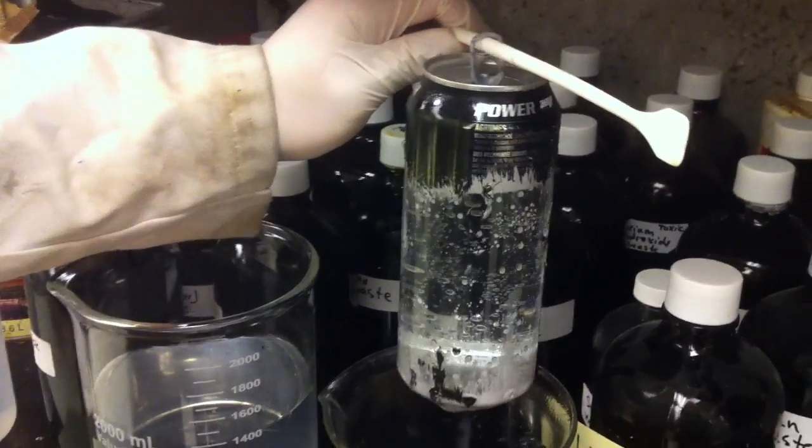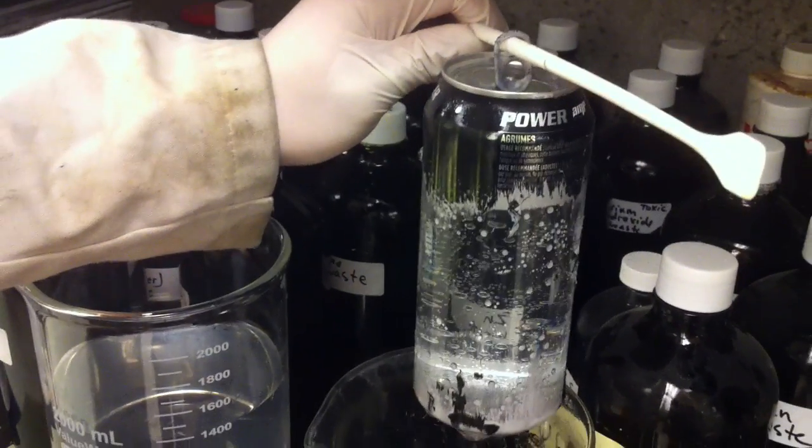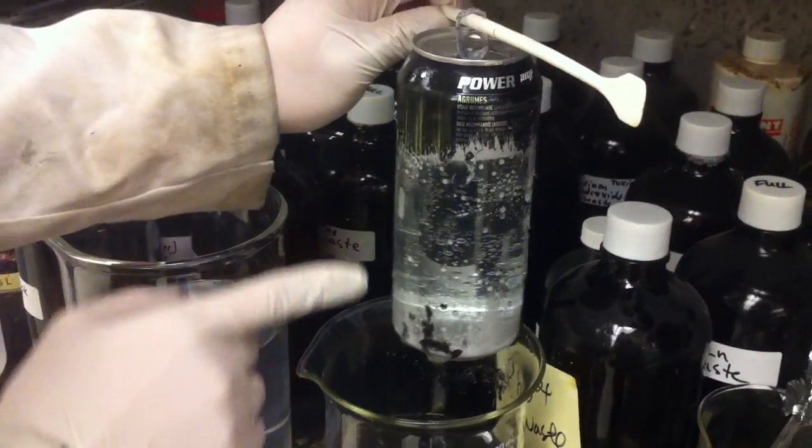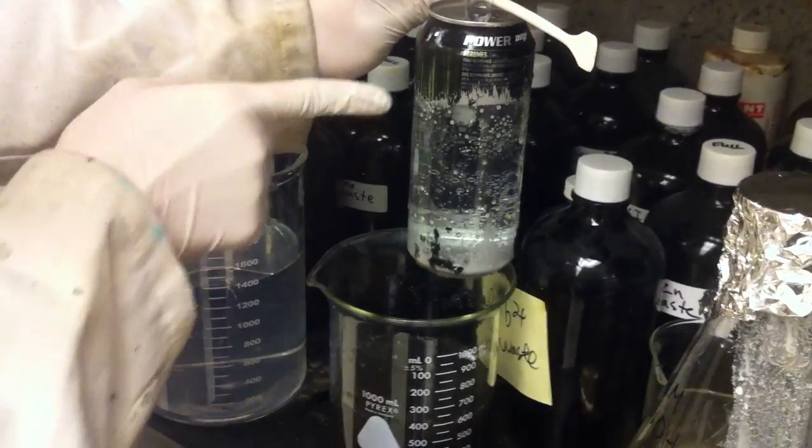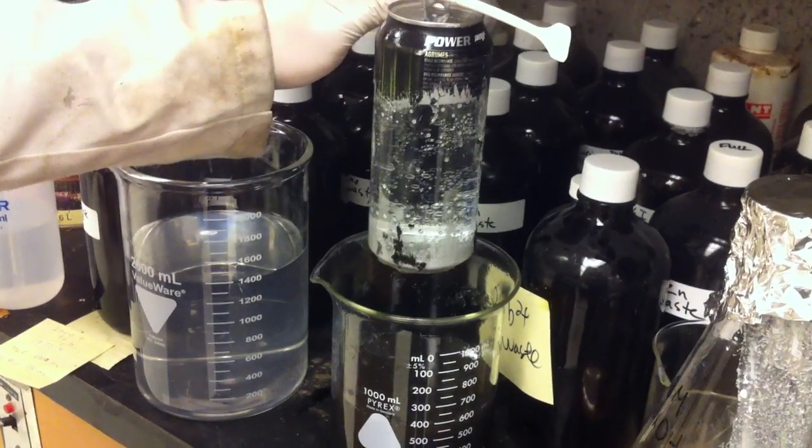We put the can on a very strong basic solution, and it melted off all the metals, and what we have left is the plastic lining, and that's what's separating the can and the pop, or whatever you put inside of it.